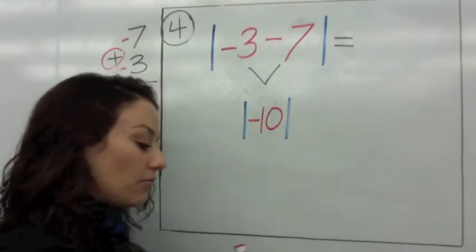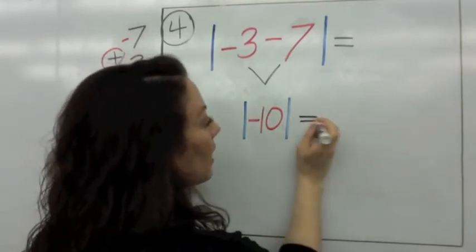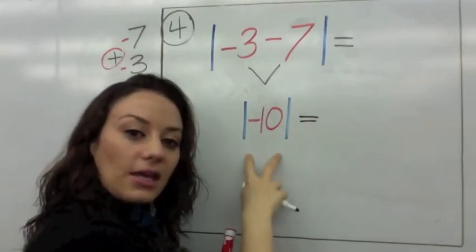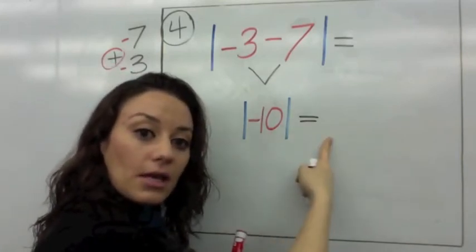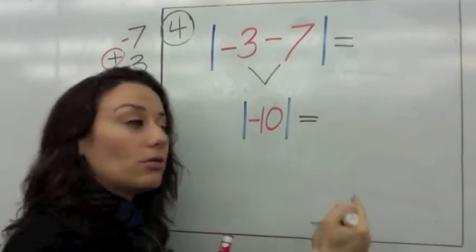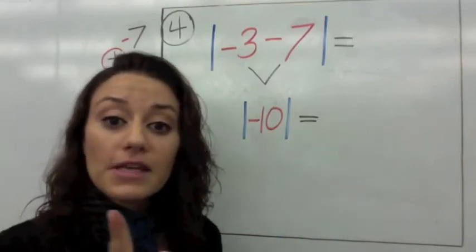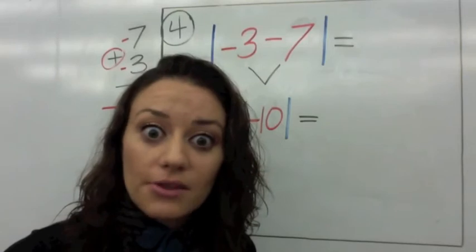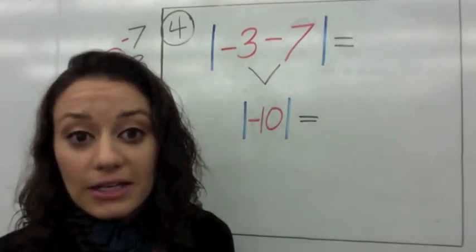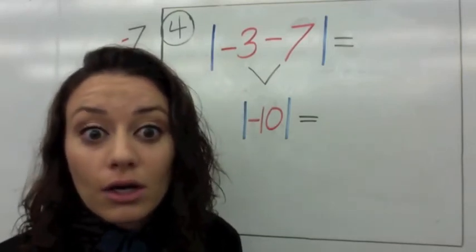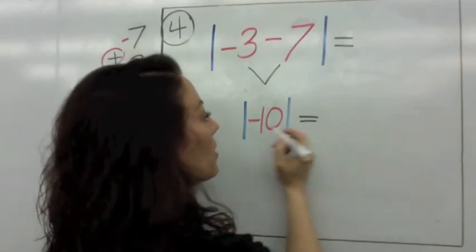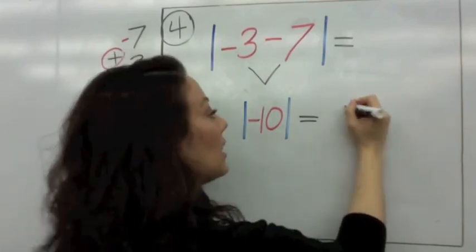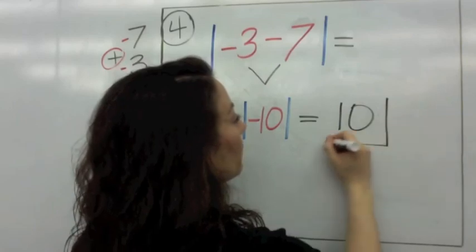We're going to put negative 10 in the absolute value, and then we ask ourselves, what is the absolute value of negative 10? Absolute value makes any integer positive. So for all of these answers, they're going to be positive — if you get a negative answer, it's wrong. The absolute value of negative 10 is positive 10.